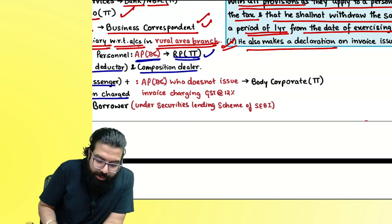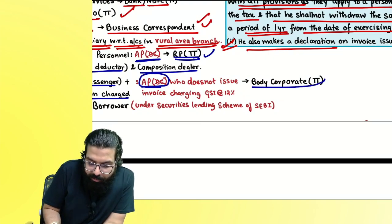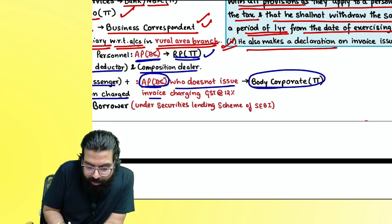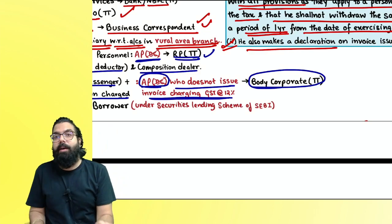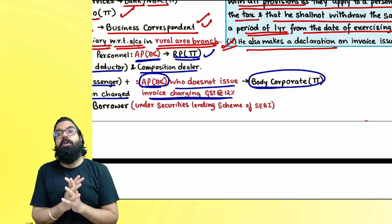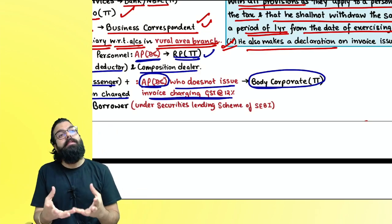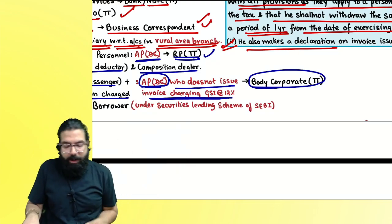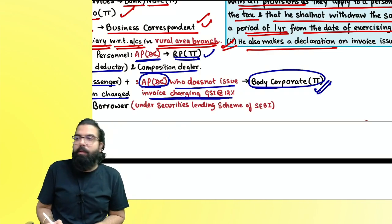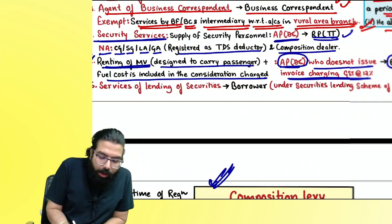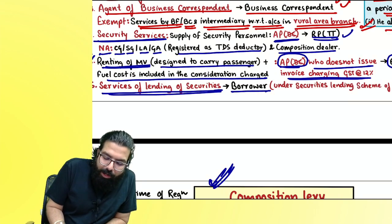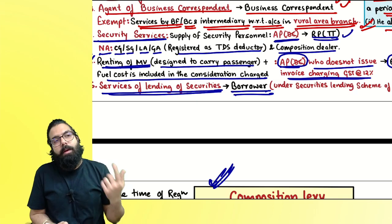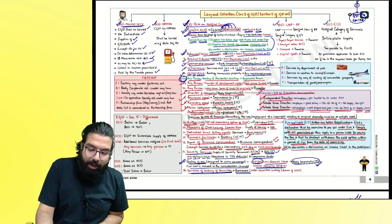For renting of motor vehicles: if any person is not issuing an invoice charging 12%, either charging 5% or no invoice, the body corporate pays GST under RCM. Securities lending: whenever a lender gives securities to a borrower, the borrower always pays GST under RCM.